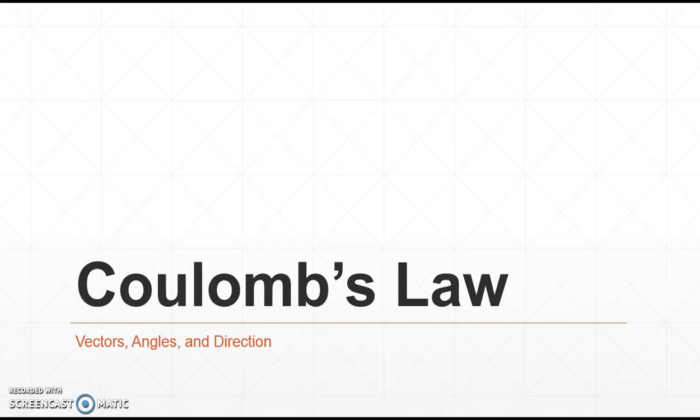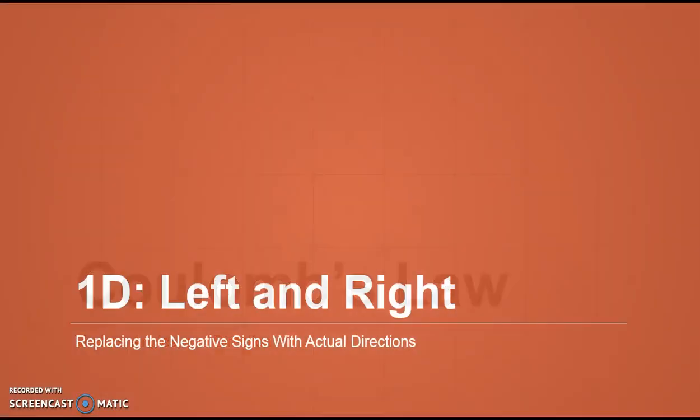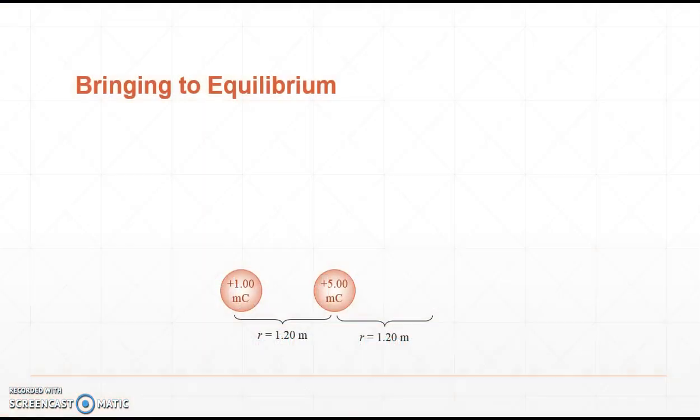Let's take a look at Coulomb's Law, vectors, angles, and direction. First and foremost, let's get our directions straight. Negative is not a direction. Let's use regular directions like left and right so we know which way things are actually going to go.